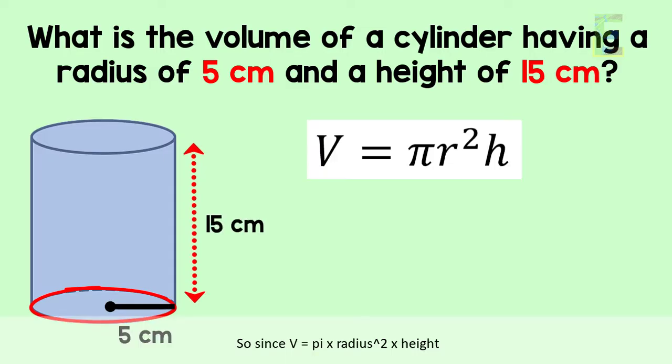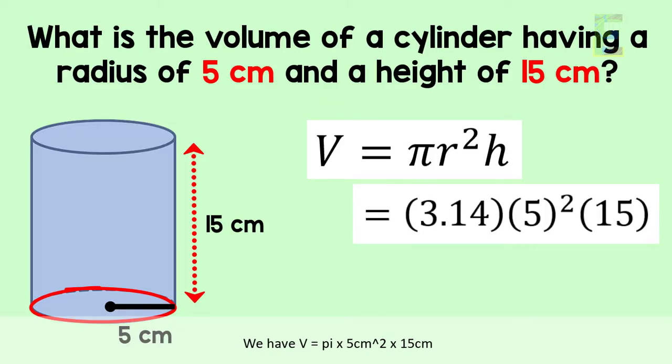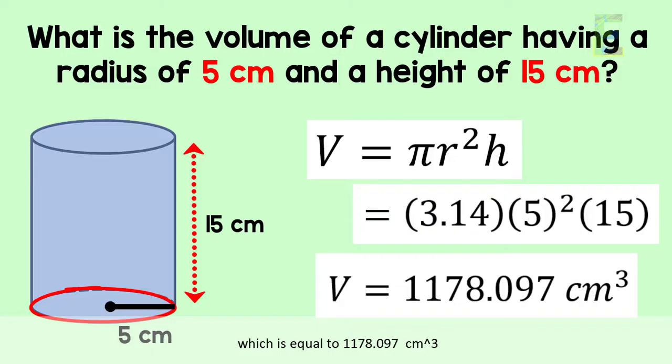Since V equals pi r squared h, we have pi times 5 squared times 15, which equals 1178.097 cubic centimeters.